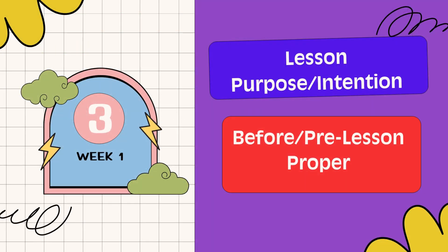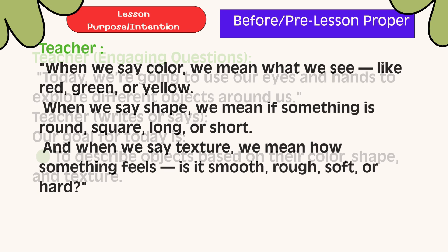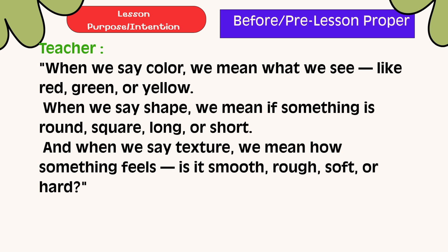Lesson Purpose: Our goal for today is to describe objects based on their color, shape, and texture. When we say color, we mean what we see, like red, green, or yellow. When we say shape, we mean if something is round, square, long, or short. And when we say texture, we mean how something feels — is it smooth, rough, soft, or hard?